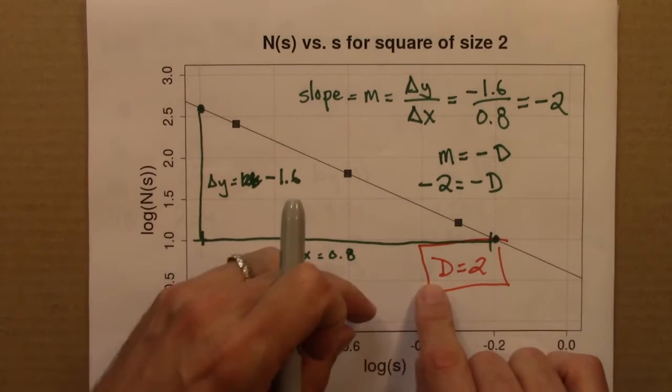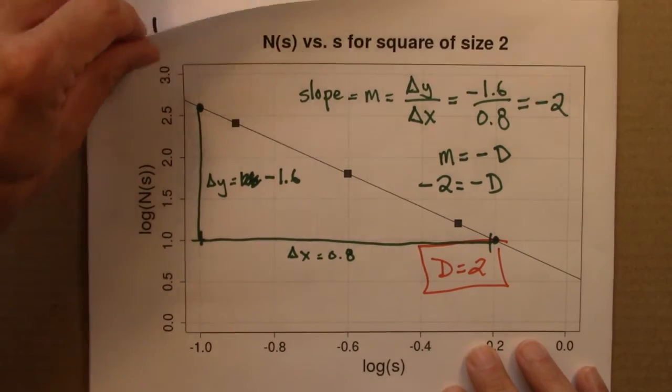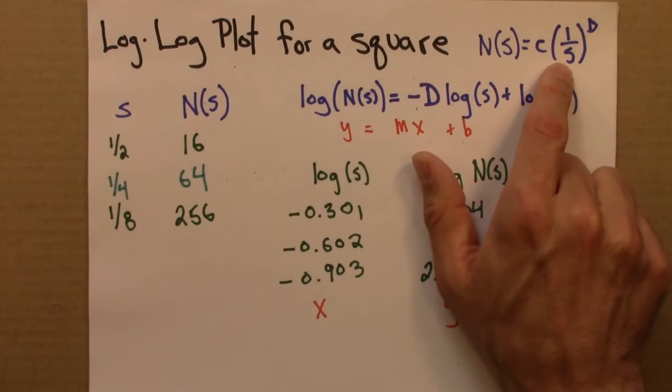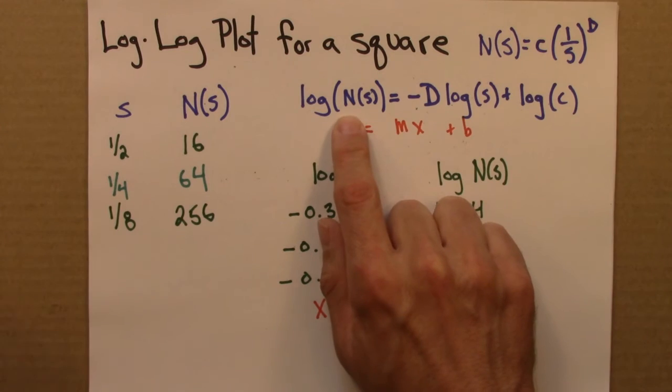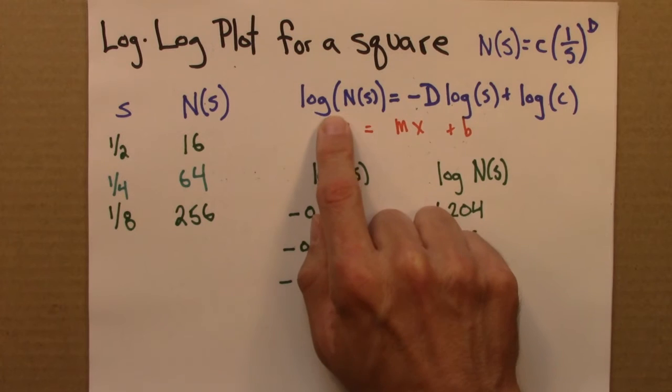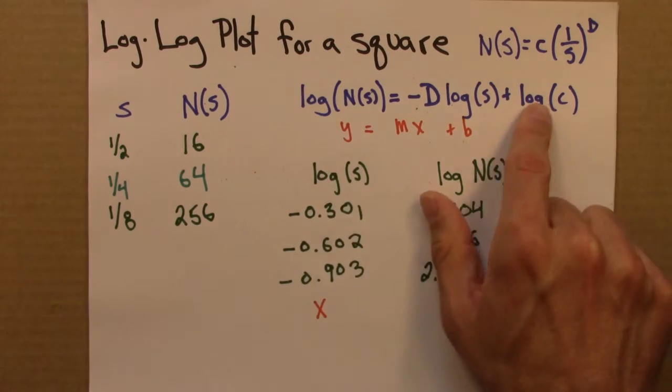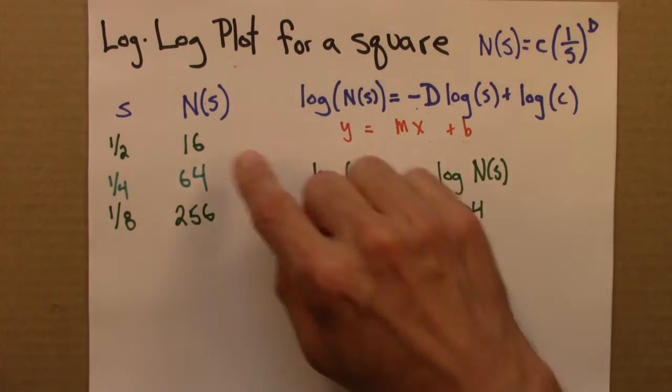But the point of this was not to learn anything new about a square, but to see how this process works. So let me summarize it again quickly. We're working with this relationship. And we can take the log and simplify and get this. And then we see that if we plot log s versus log n of s, we will get a straight line.